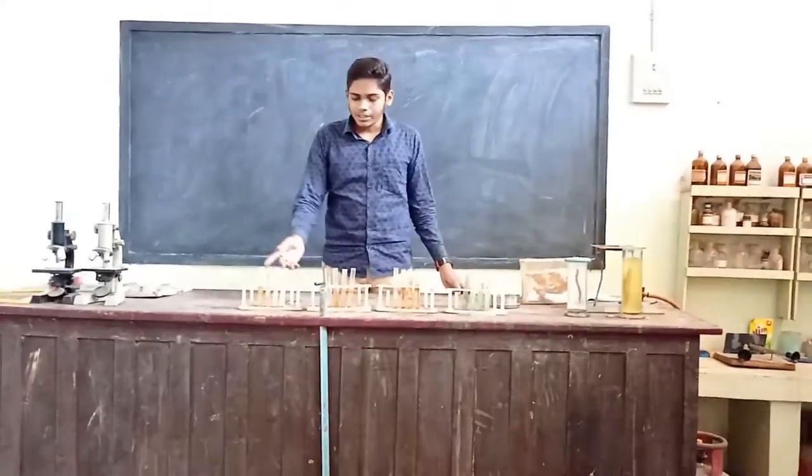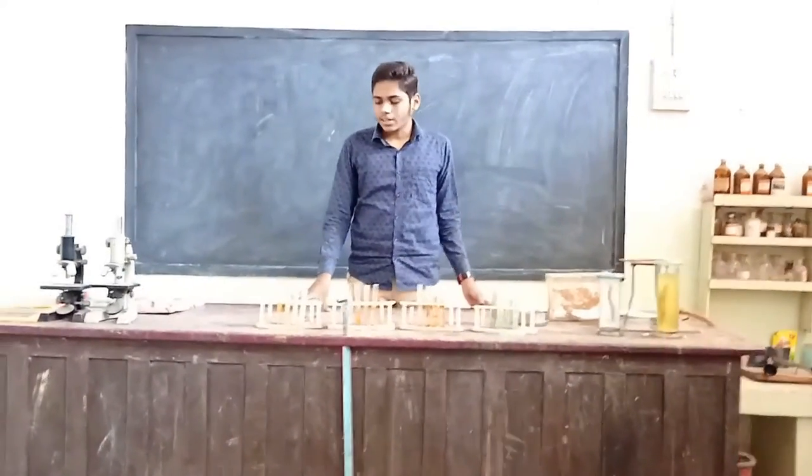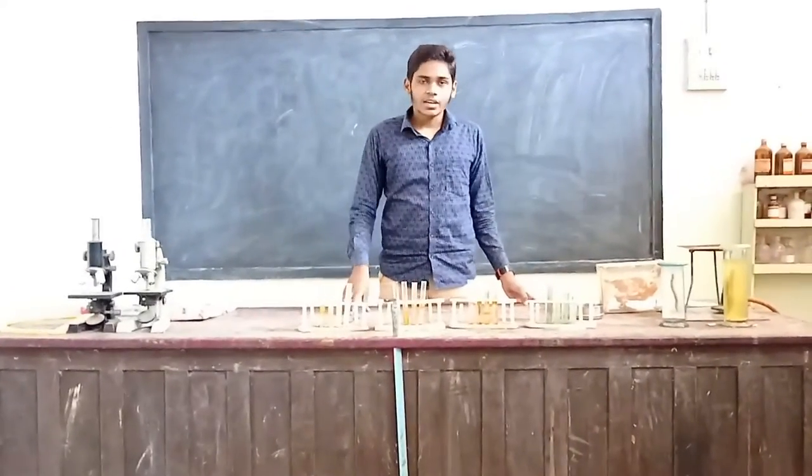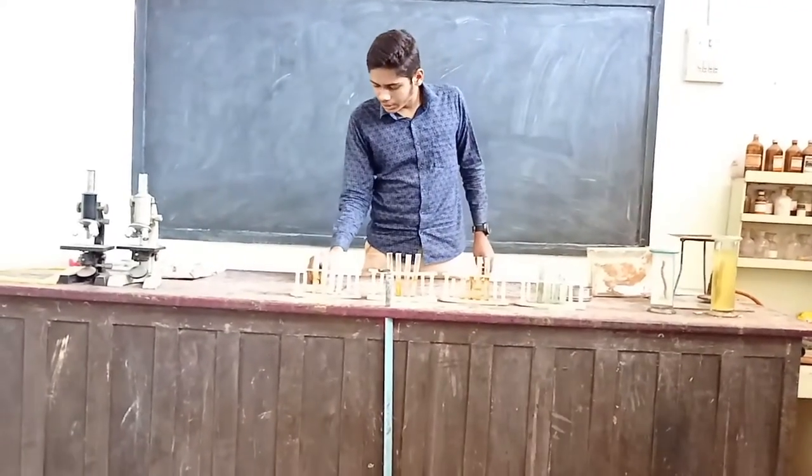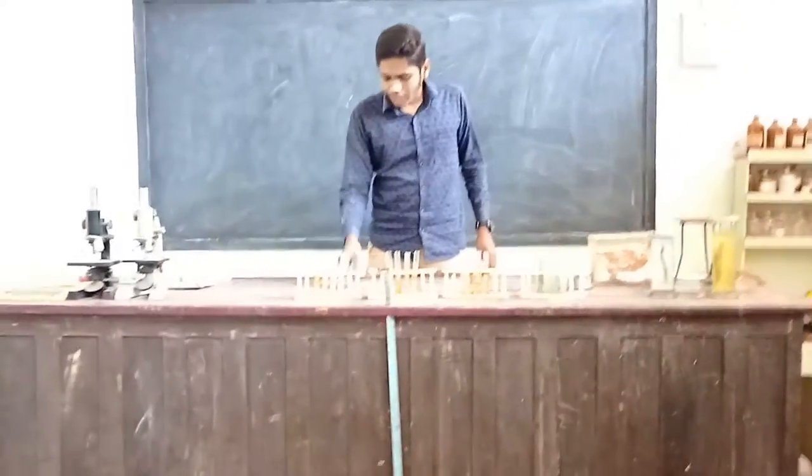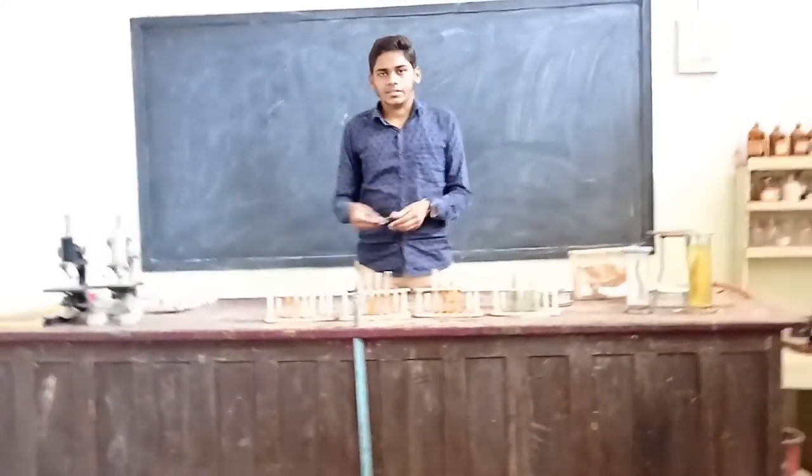So, we need 16 test tubes and the chemicals: Aluminium Sulphate, Ferrous Sulphate, Zinc Sulphate and Copper Sulphate, and 4 strips of each metal which are Aluminium, Ferrous, Copper and Zinc.